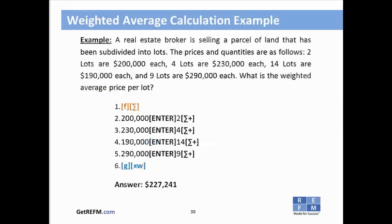Example: a real estate broker sells a subdivided parcel of land. Two lots at $200,000 each, four lots at $230,000 each, 14 lots at $190,000 each, and nine lots at $290,000 each. What is the weighted average price per lot? Clear statistics registers with F-sigma; enter $200,000, Enter, 2, sigma-plus; $230,000, Enter, 4, sigma-plus; repeat for $190,000 and $290,000 prices. Press blue G and blue XW. The weighted average price per lot is $227,241.